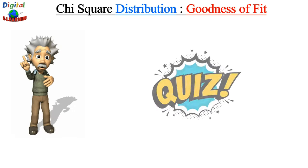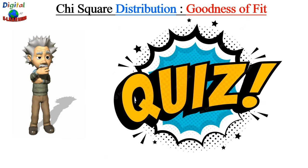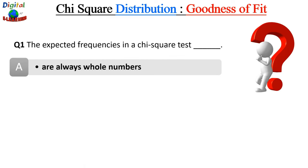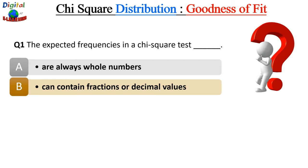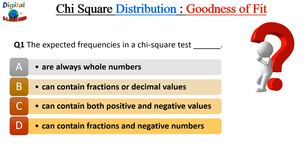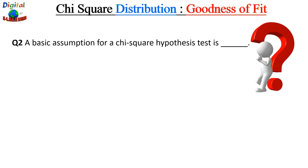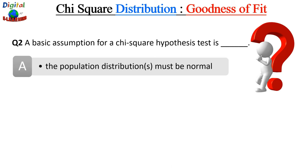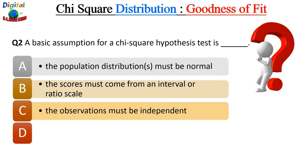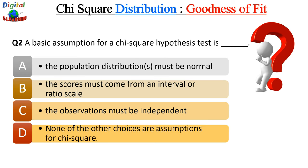Now it is quiz time. Question 1: The expected frequencies of a chi-square test — (a) are always whole numbers, (b) can contain fractions or decimal values, (c) can contain both positive and negative values, or (d) can contain fractions and negative values? Question 2: The basic assumption for a chi-square hypothesis test is — (a) the population distribution must be normal, (b) scores must come from an interval or ratio scale, (c) observations must be independent, or (d) none of these? Leave your answers in the comments below.